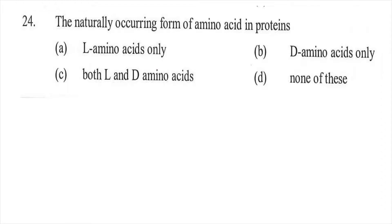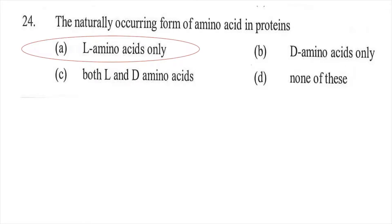Question twenty-four: The naturally occurring form of amino acids in proteins is — option A L-amino acids, option B D-amino acids, option C both L and D amino acids, or option D none of these. The right answer is A, only L-amino acids are the naturally occurring amino acids in proteins.